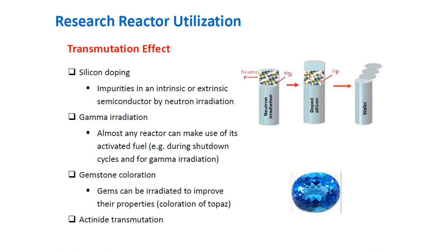Transmutation effects include applications where neutrons or gamma radiation are used to bring about changes in material properties. These applications usually require significant neutron flux to induce the effects within a reasonable time period, requiring medium and higher-powered research reactors. Additionally, fairly large uniform flux irradiation positions are often required. Transmutation applications include silicon doping, gamma radiation, gemstone coloration, and actinide transmutation.